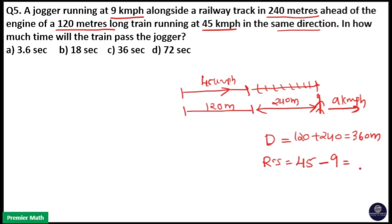Then time is equal to distance divided by speed. This is 360 meters and this is 36 kilometers per hour, so 360 divided by 36 into 5 by 18. 18 into 2 is 36, so 2 into 5 is 10. That is 36 seconds is the answer. Option C is your answer.